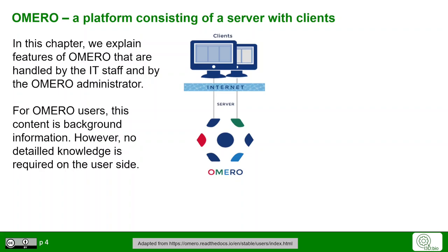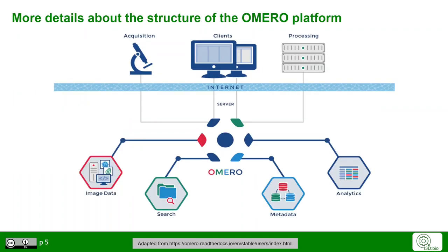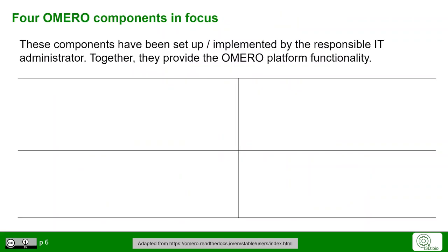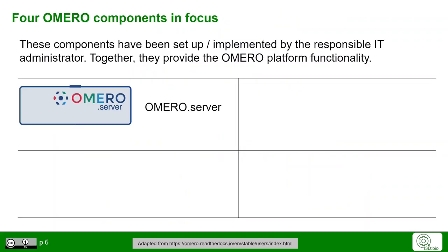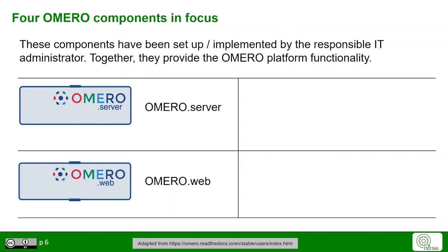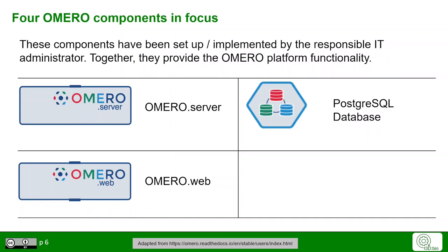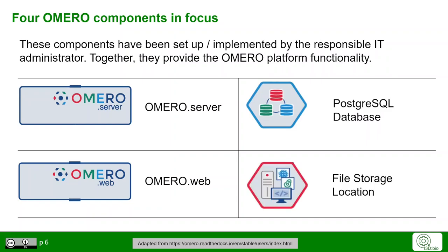What is there beyond the central server and the clients? The central server is connected to different components that together make the system work, and clients can connect via OMERO to these different components. The four most important components are: OMERO Server, OMERO Web as the web client, a PostgreSQL relational database in the backend, and the actual file storage.